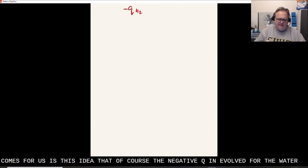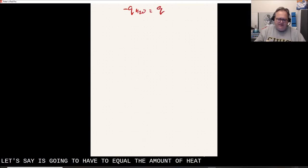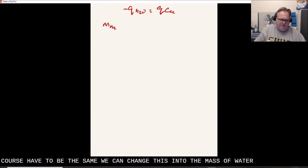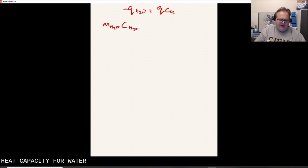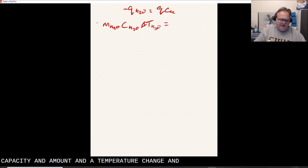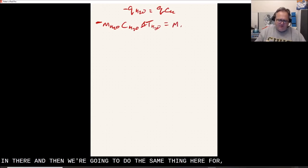I got this from slide 26, table 6.4. You see the heat capacity data for copper and water from that table. So where this comes for us is this idea that the negative Q involved for the water is going to have to equal the amount of heat for the copper. Again, it's a transfer of energy from one to the other.